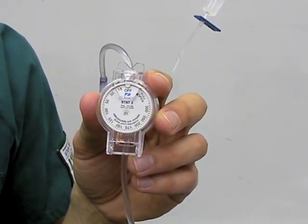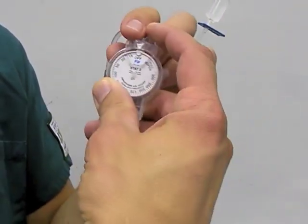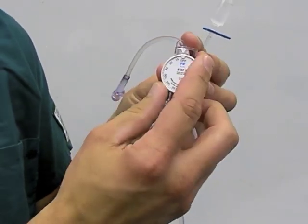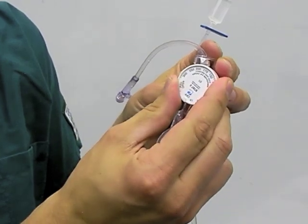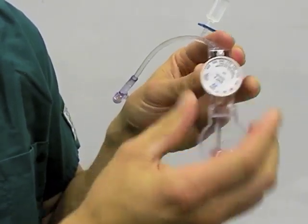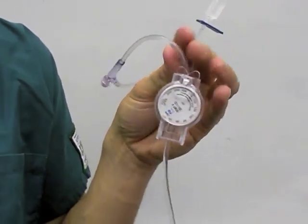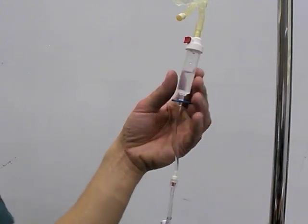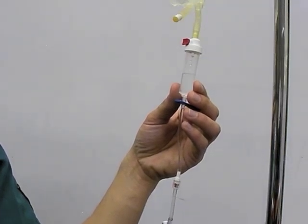Since we are using a dial-of-flow on this administration set, we can set our drip rate at the ordered 200 milliliters per hour by simply turning the dial to 200. After setting the drip rate, we still manually check the rate by counting the drips in the drip chamber, which we have calculated to be 50 drops per minute.